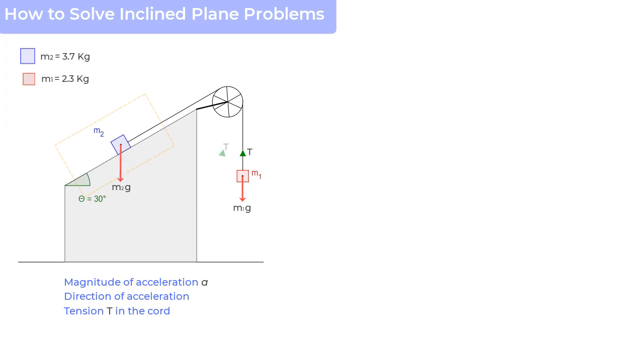The other force acting on m2 is tension T in the cord. And since it is one single cord passing smoothly over the pulley, there would be a similar tension in the string on this side as well. And this is a force which will actually pull mass m2 up the incline. Now do you see any other force acting on m2? No, there is no other force.